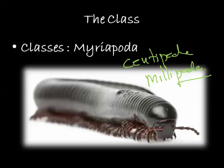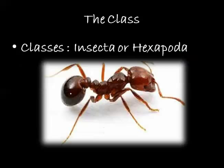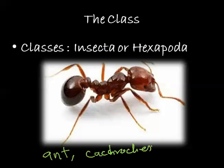The last class, which is what we are basically dealing with when discussing insects, is Insecta. We have seen the characteristics of Hexapoda. In this category we have a lot of insects — for example, cockroaches and termites come under this particular category.